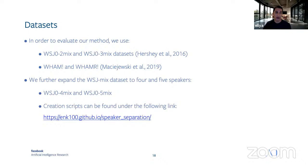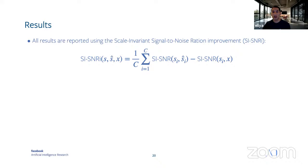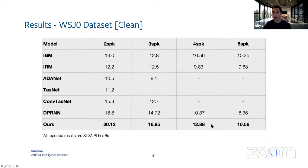All results are reported in scale-invariant signal-to-mixture ratio (SI-SNR). For the clean WSJ0 dataset, we show results for two, three, four, and five speakers. Our model achieves state-of-the-art results across all numbers of speakers. For example, for five speakers we get an improvement of over 2 dB, and for four speakers an improvement of almost two and a half dB.